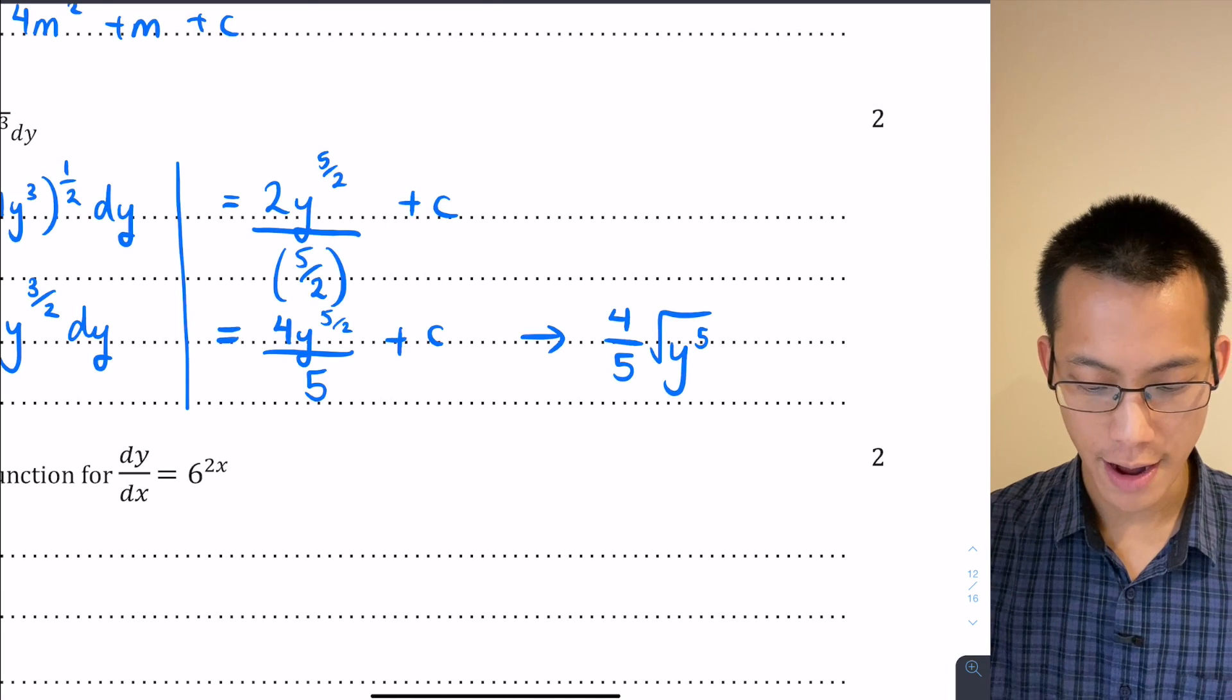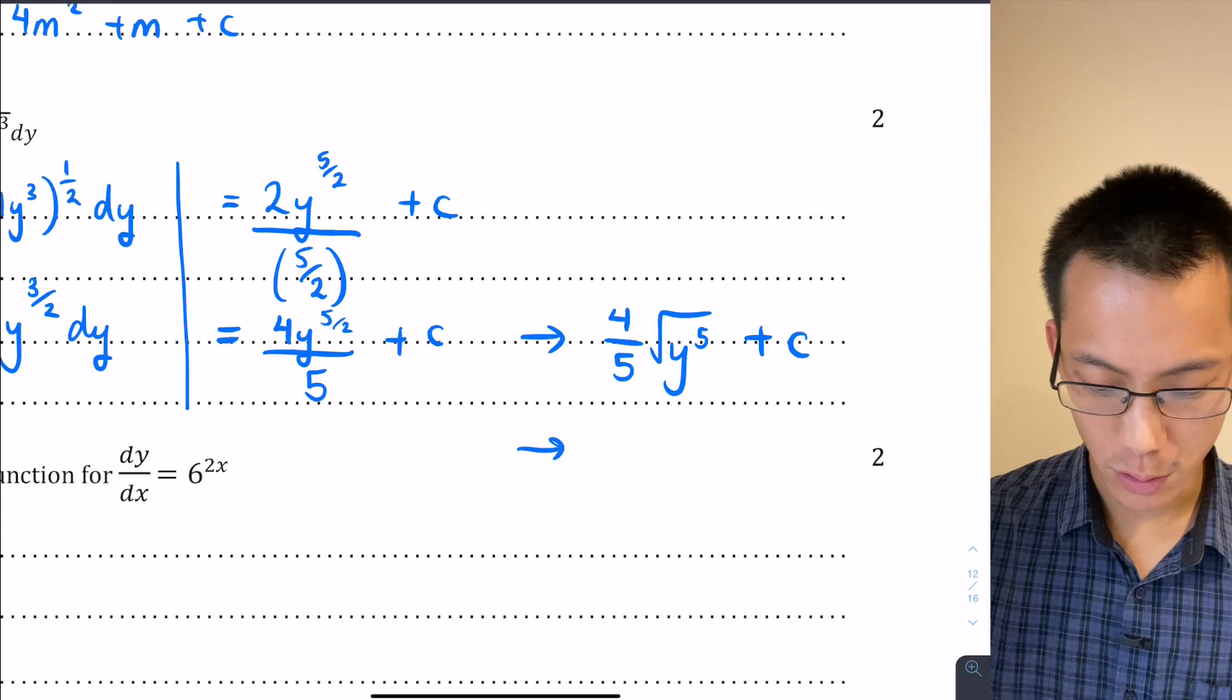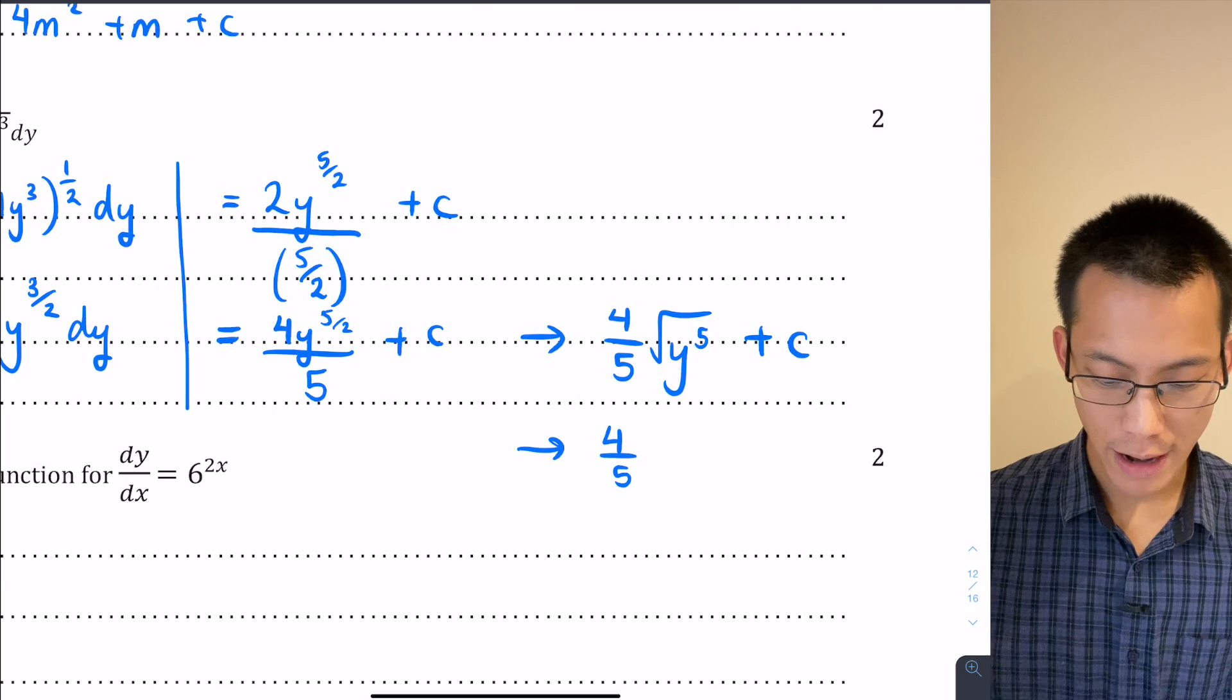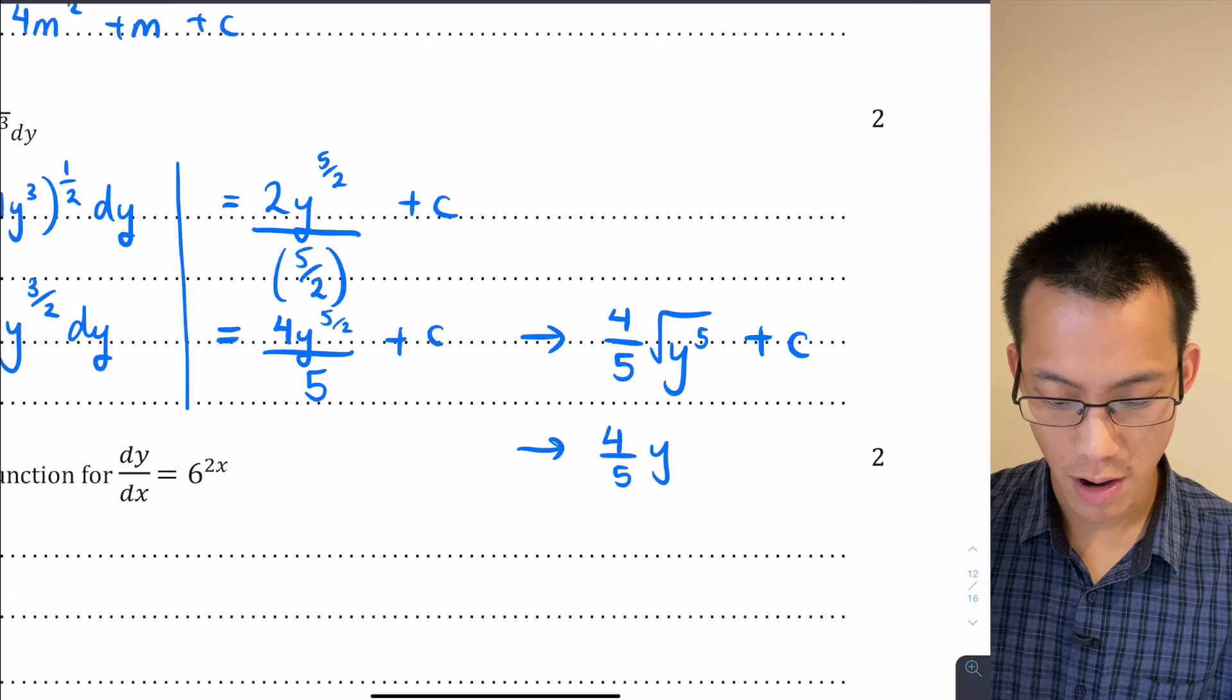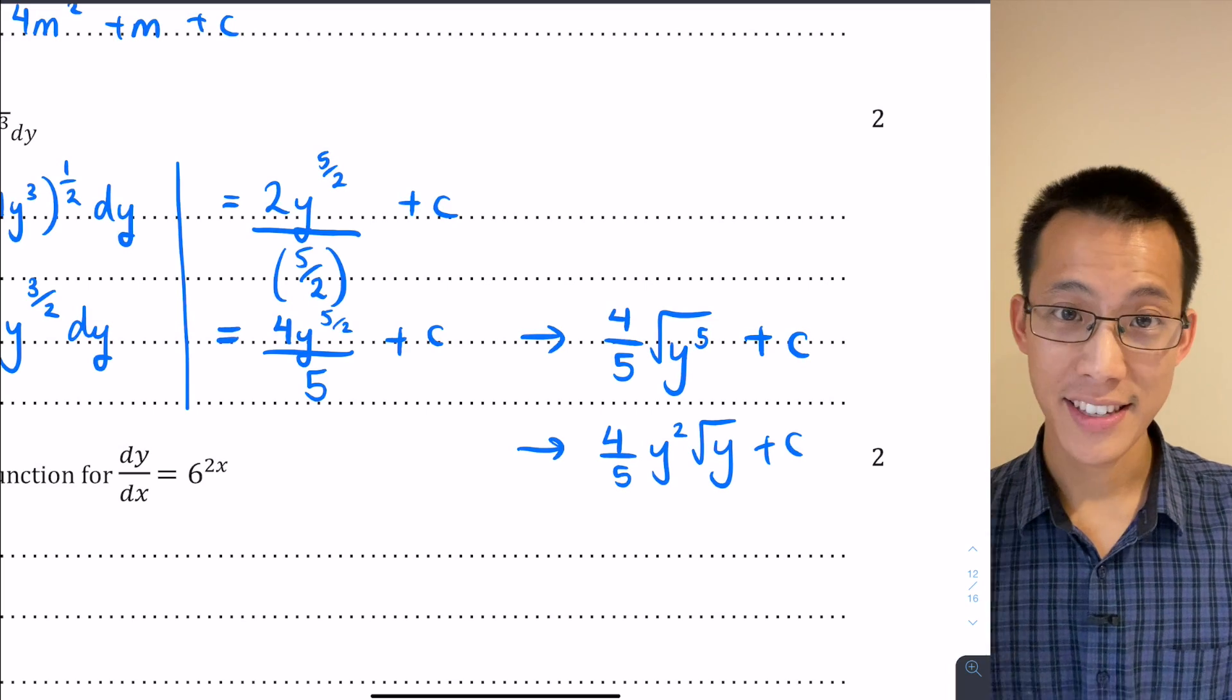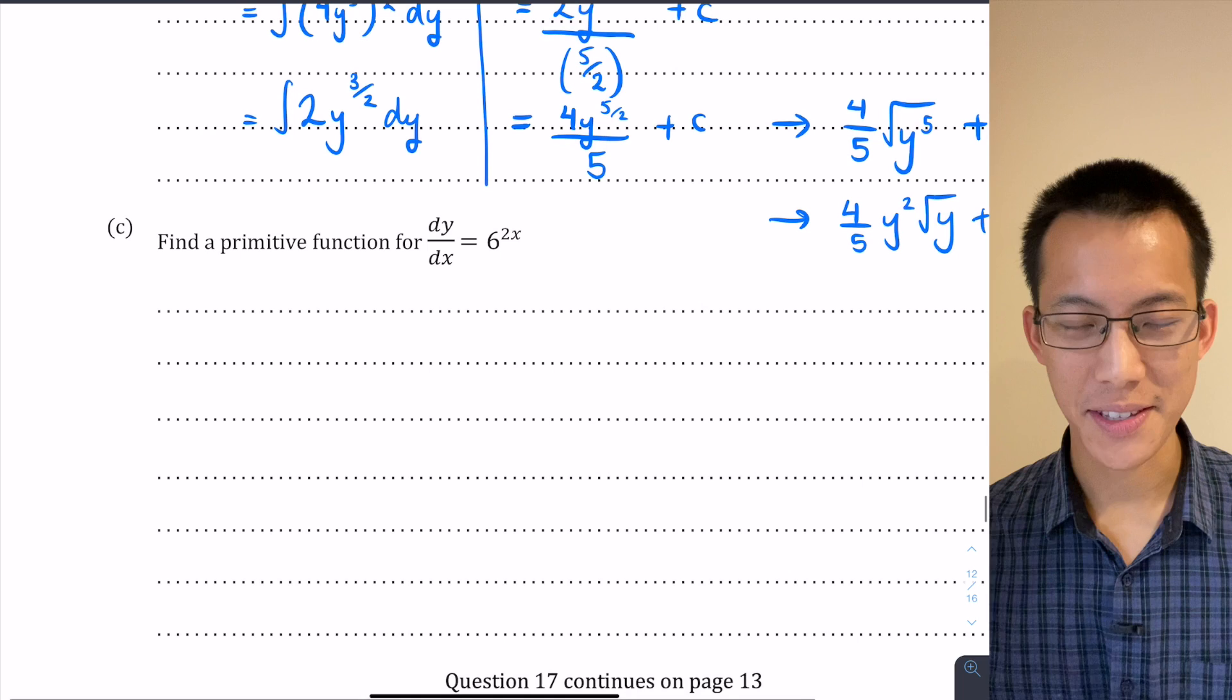Or you could even write that as, that's also equivalent to 4/5 the square root of y to the 5, if I take out a factor of y to the power of 4 you get y² square root of y plus c. Okay let's have a look at part c.